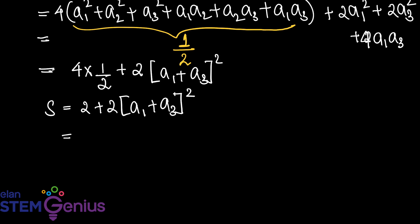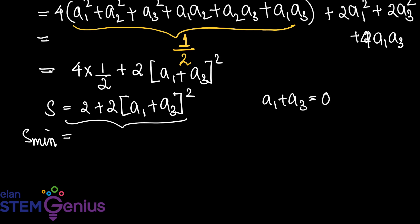The minimum value of S is equal to 2 plus 2 times 0, which equals 2. Therefore the answer is option b.